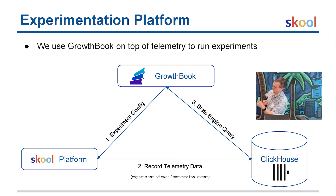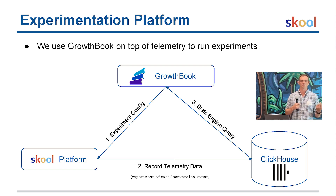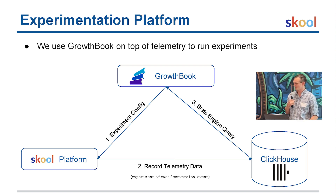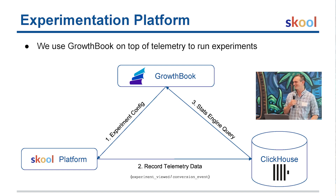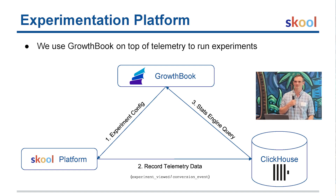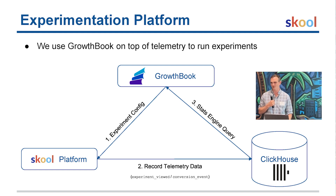GrowthBook is an open-source tool that can run statistical queries directly on top of that ClickHouse data. It knows about the experiment view event, what buckets users are in, and the order of operations — for instance, if someone saw multiple variants. ClickHouse was fast enough that we didn't need to do any extra optimization to get experiment results back quickly. We run the experiment until it converges to statistical significance, and then we can make better business decisions based on the results. It's a key piece of our experimentation pipeline.